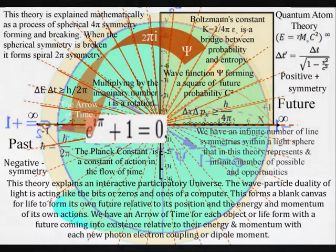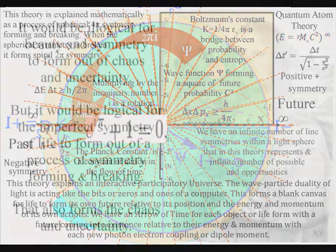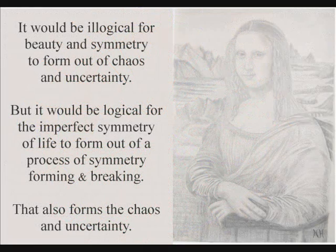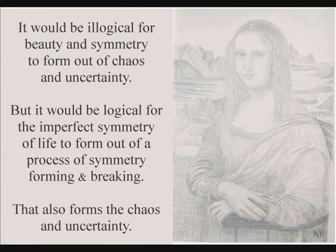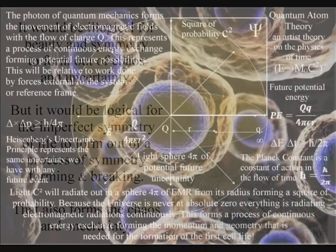This process of symmetry forming and breaking also forms the possibility for the formation of more complex and diverse forms of symmetry, that we see as the imperfect symmetry of cell life.